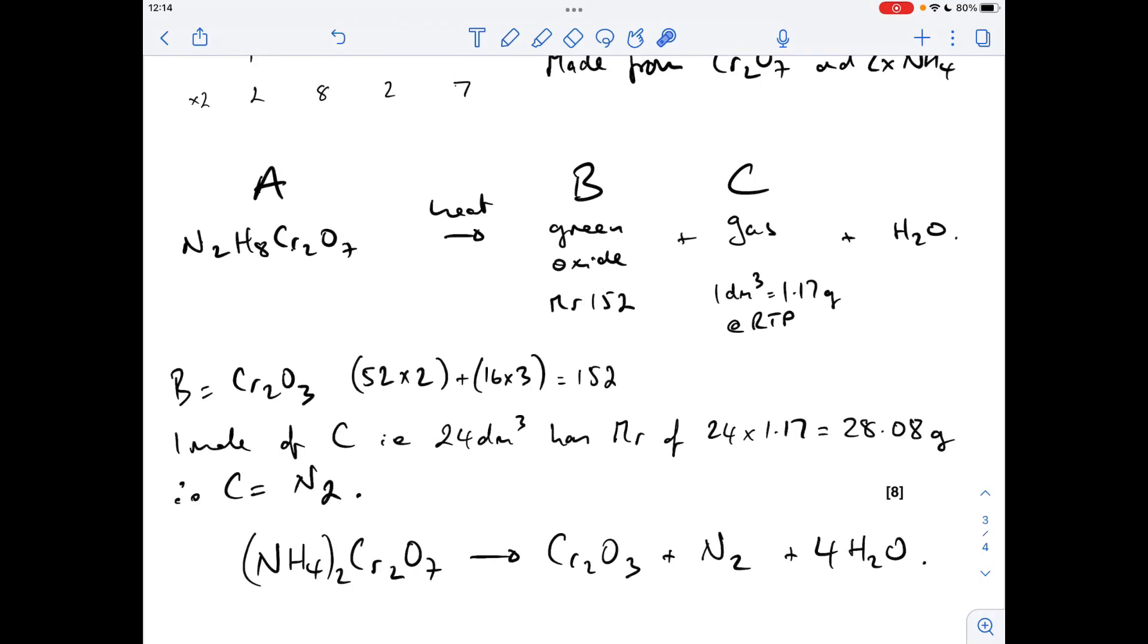And finally, the equation. So here's the equation for the heating of A. I've shown the correct formula for it. Obviously, we've established the ions, so I'm going to write the formula correctly there. You could just write that. That's fine. So that's heating up and breaking down to give the Cr₂O₃, the nitrogen gas, and we need four waters to balance the equation.